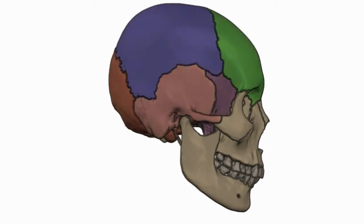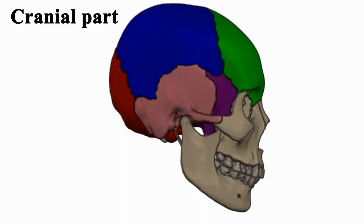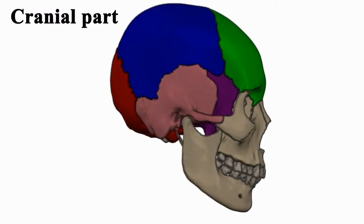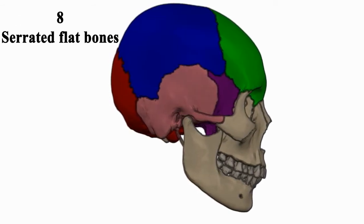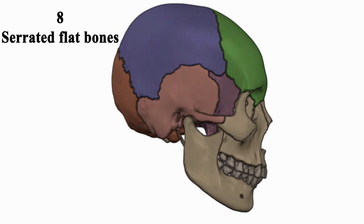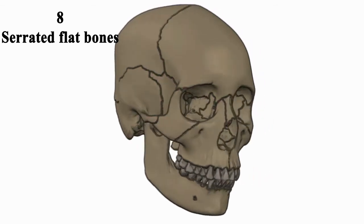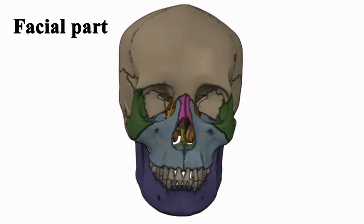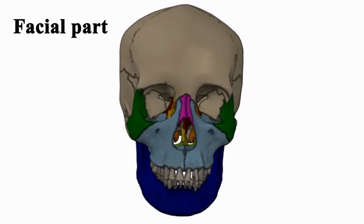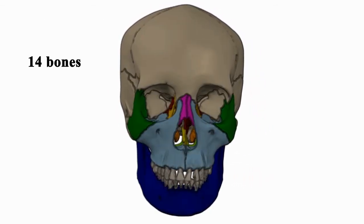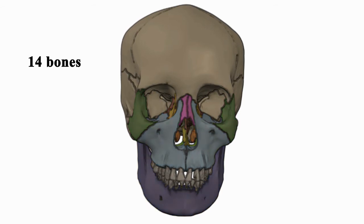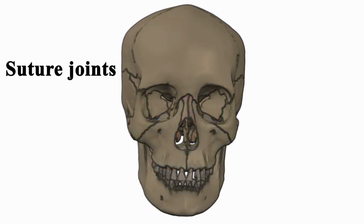The skull consists of a posterior part called the cranial part, which consists of eight serrated flat bones. The anterior part, called the facial part, consists of 14 bones. The bones of the skull join together through suture joints.